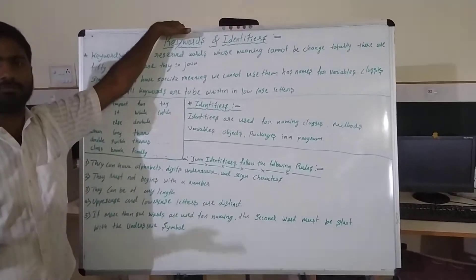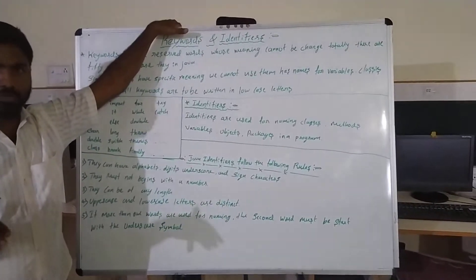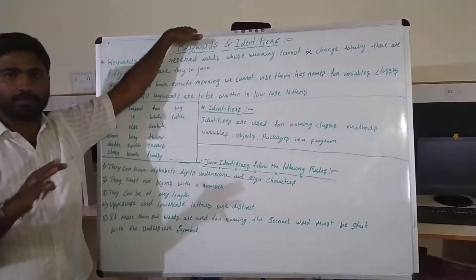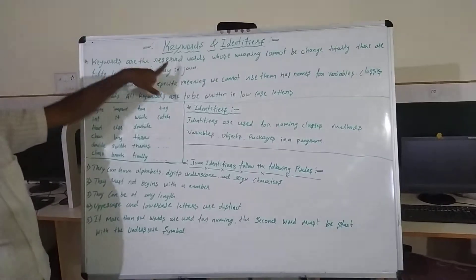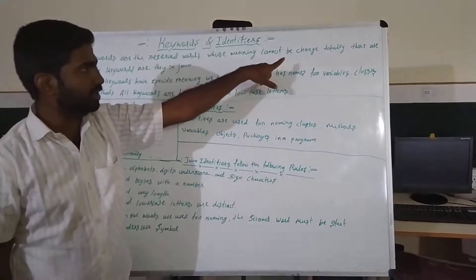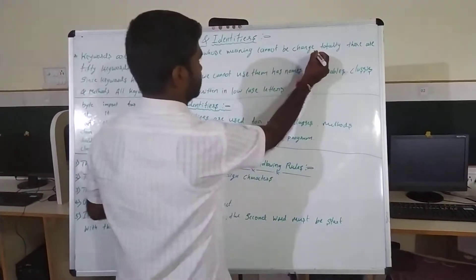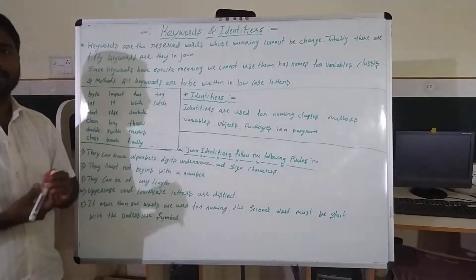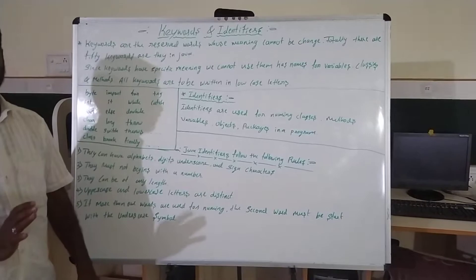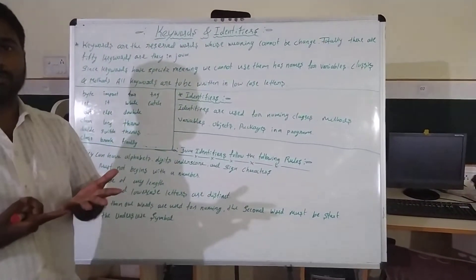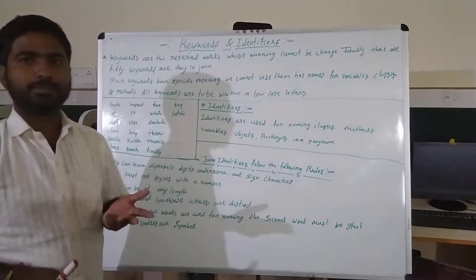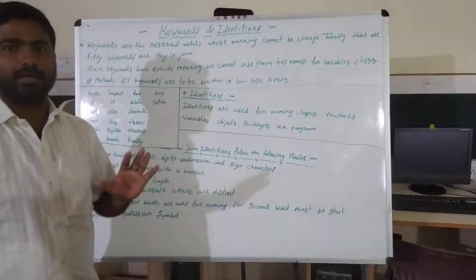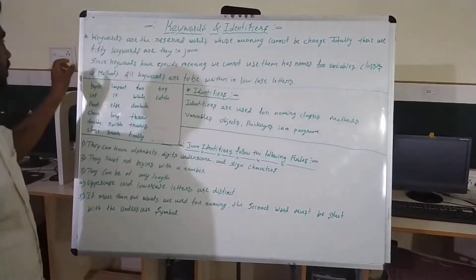Keywords are the reserved words whose meaning cannot be changed. In Java we have 50 keywords. In C we have 51 keywords, in C++ we have 50 keywords, and in Java we have 50 keywords.